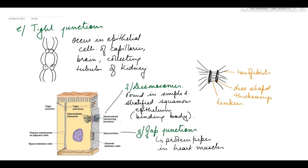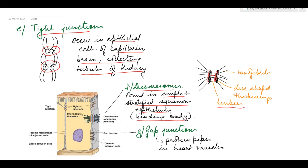Tight junctions bind two adjacent cell membranes together; they are found in epithelial cells of capillaries, brains, and collecting tubules of kidneys. Desmosomes, referred to as binding bodies, are found in simple and stratified squamous epithelium. They have two disc-like structures joined by linkers, with protein fibrils called tonofibrils radiating into the cell membrane. Last are gap junctions, which are protein pipes found in heart muscles.